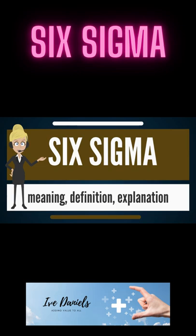The term Six Sigma is capitalized because it was written that way when registered as a Motorola trademark on December 28, 1993. It originated from terminology associated with statistical modeling of manufacturing processes. The maturity of a manufacturing process can be described by a Sigma rating indicating its yield, or the percentage of defect-free products it creates. A Six Sigma process is one in which 99.99966% of all opportunities to produce some feature of a part are statistically expected to be free of defects — 3.4 defective features per million opportunities. Motorola set a goal of Six Sigma for all of its manufacturing operations, and this goal became a byword for the management and engineering practices used to achieve it.